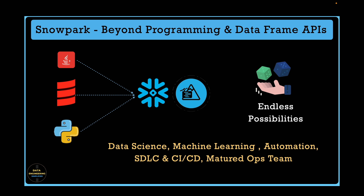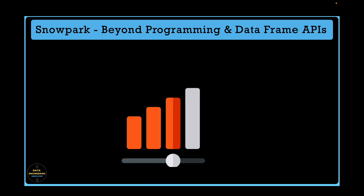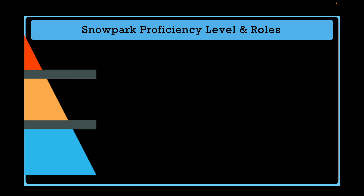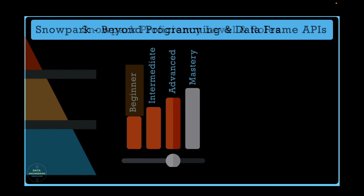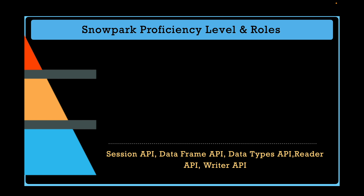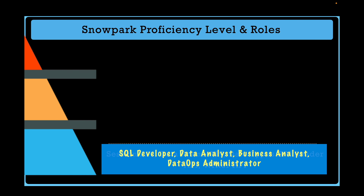Let's quickly see if you have to learn Snowpark based on your current role, and if yes, what should be your proficiency level. Should it be beginner, intermediate, advanced, or mastery with Snowpark APIs? At the beginner level, you must know how to establish a connection to Snowflake using Snowpark APIs and have basic working knowledge with Snowpark DataFrame APIs like select, filter, join, union, rename column, etc., including how to read data from a table or a file within a stage location — at least CSV or Parquet file formats, which are pretty common in the data world. You must also have a good understanding of the data type API to define schemas for CSV files. If you are a SQL developer, data analyst, business analyst, or data ops administrator, this proficiency level is good enough for you, as it requires very bare minimum programming knowledge using Snowpark API.